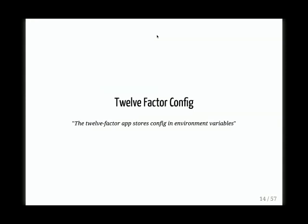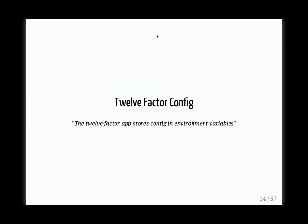12-factor config says that the app stores config in environment variables — that's the mantra. So let's go back to the world simulation. Let's say we need to simulate it in different environments: simulate 1984 on Earth, simulate it on Mars, simulate it in the Horsehead Nebula. It would be quite daunting to try to configure everything with environment variables — at least quite daunting for me. I would rather prefer something more rich and more data-driven.